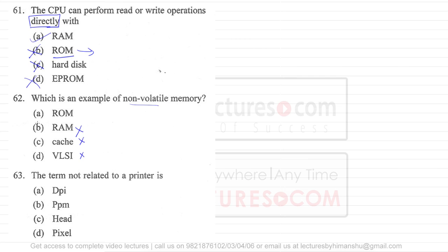But data which is present in ROM is already embedded. Again you cannot write any data onto the ROM because it is already hardware configured. So ROM is an example of a non-volatile memory.